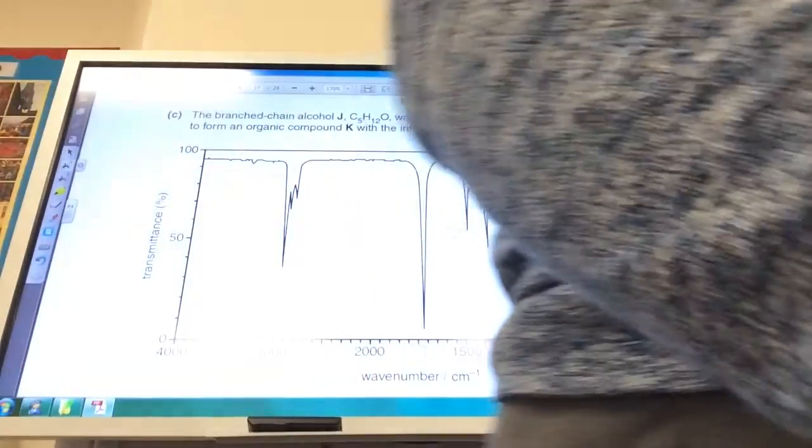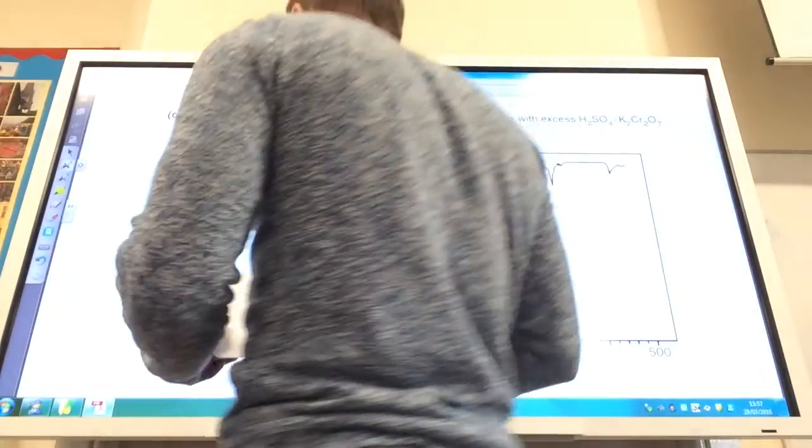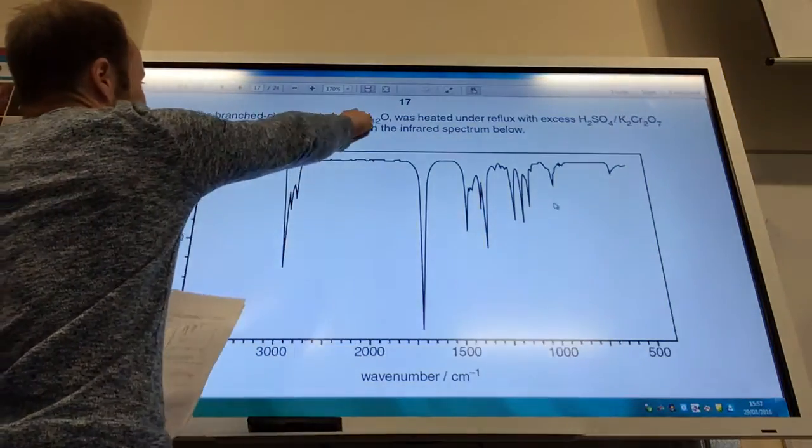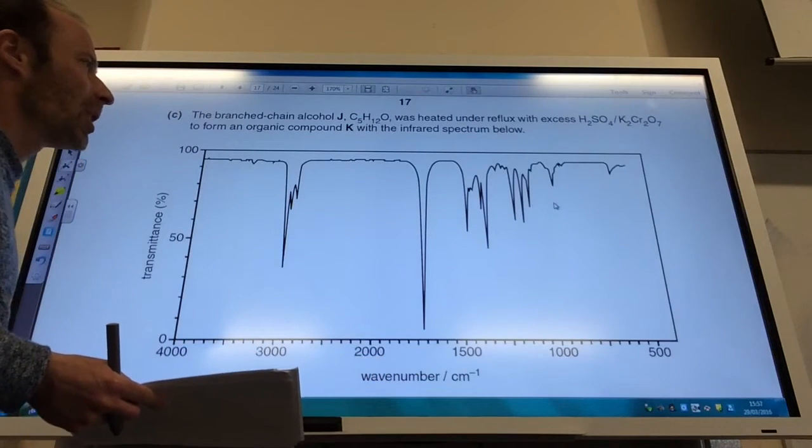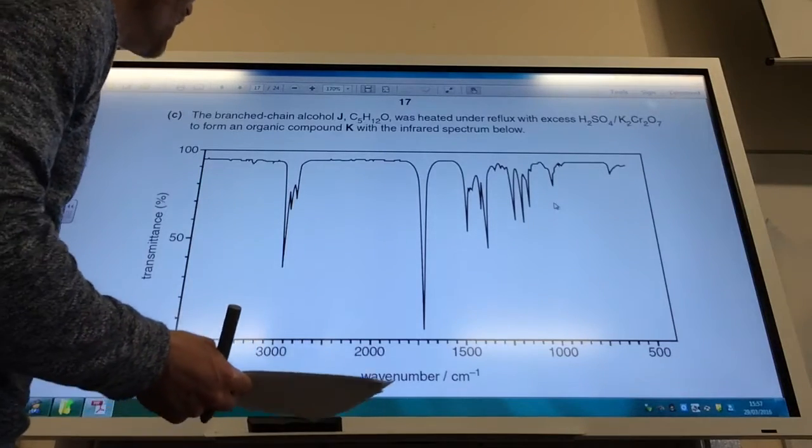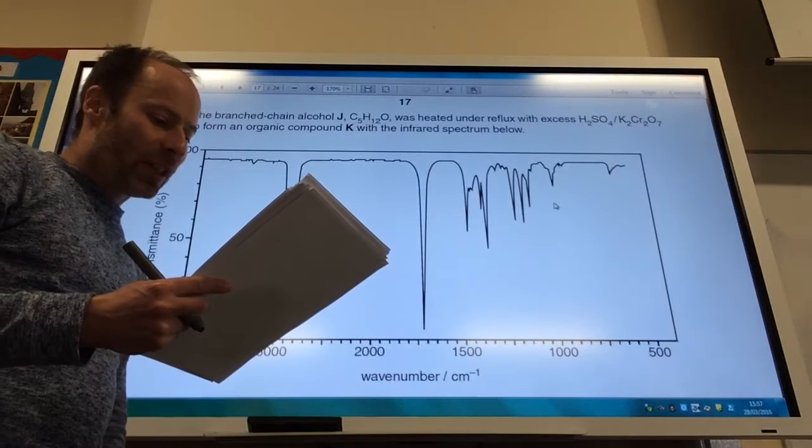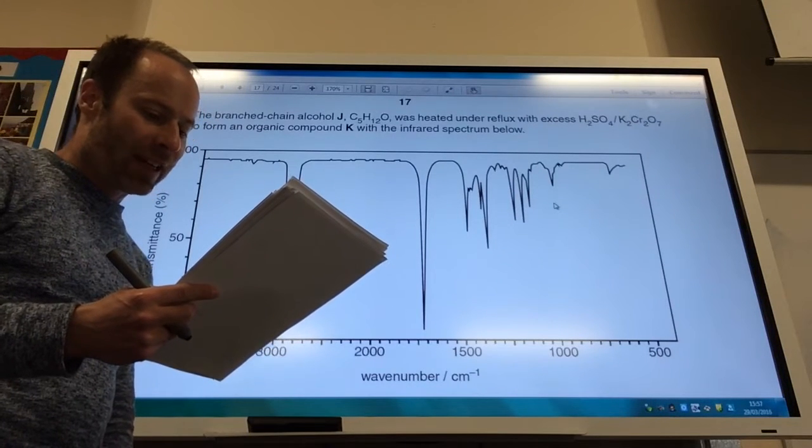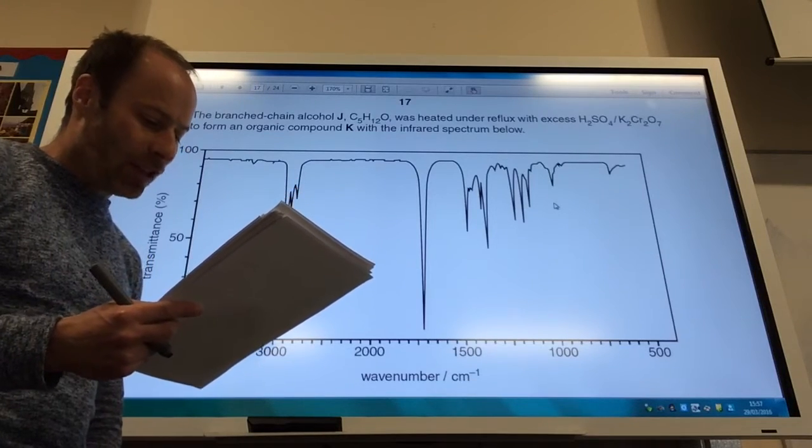Okay, so, here we go. Branched chain alcohol J. So, it's a branched chain alcohol J, which is heated under reflux with excess potassium dichromate and sulfuric acid to form an organic compound K with the infrared spectrum below. So, determine the structures of the branched chain alcohol J and the compound K, given reasoning, and then write an equation.